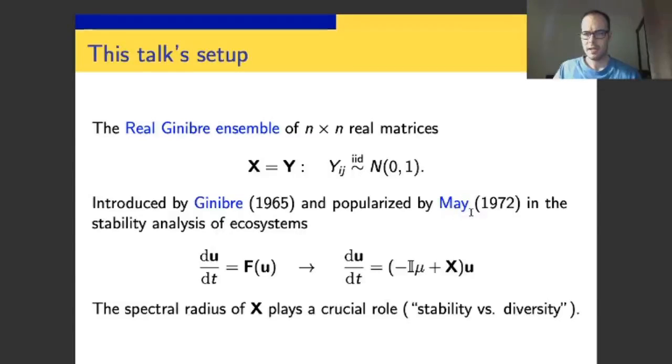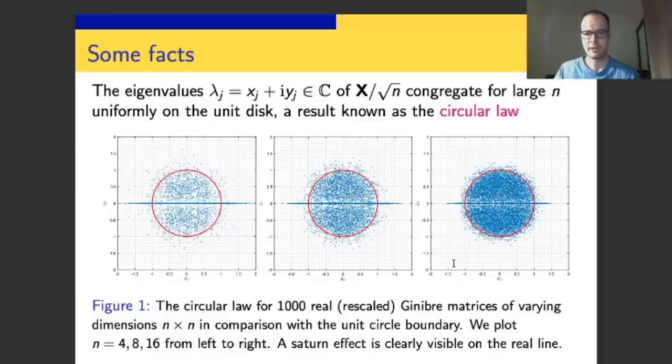By the time of May's paper in 1972, not too many things had been known about the spectral radius of a real Ginibre matrix. What was known, this appeared in Ginibre's paper in '65, was the circular law. In other words, the almost sure convergence of the underlying empirical spectral distribution.